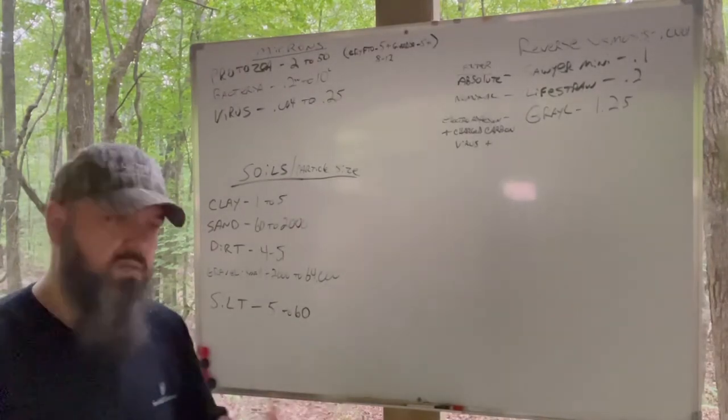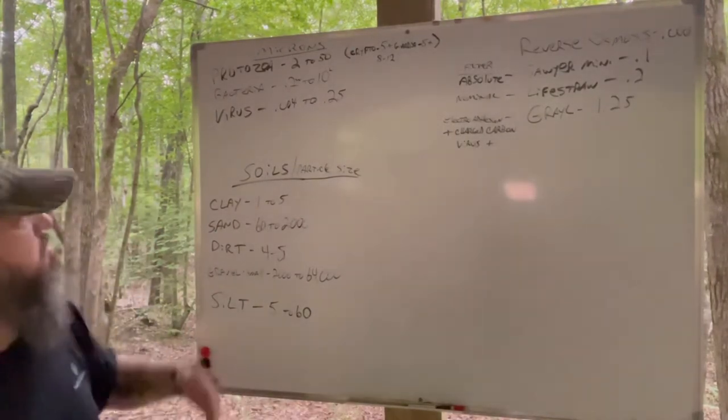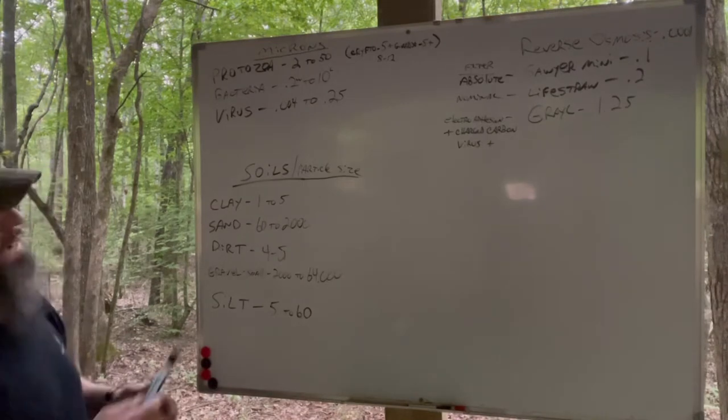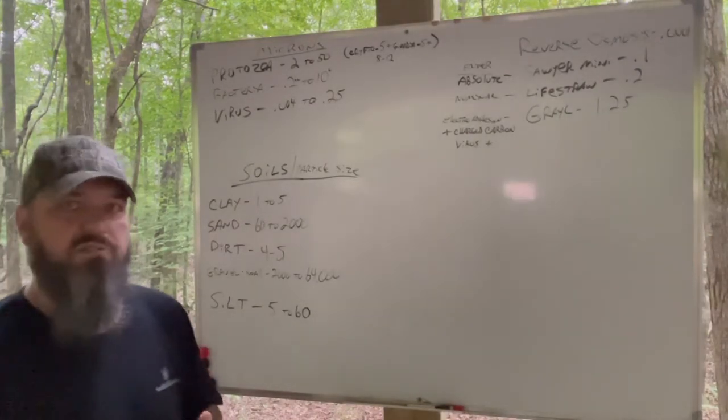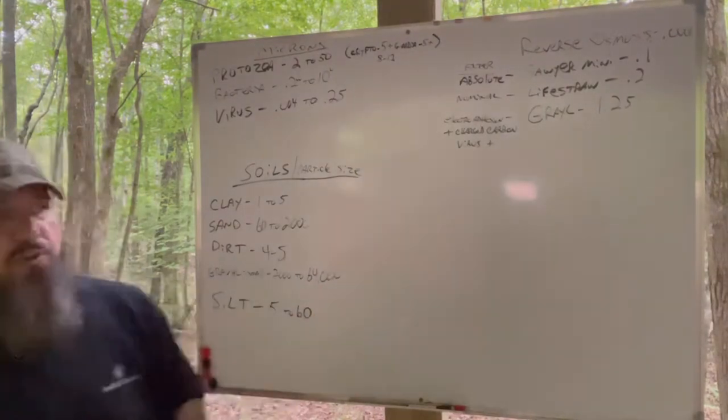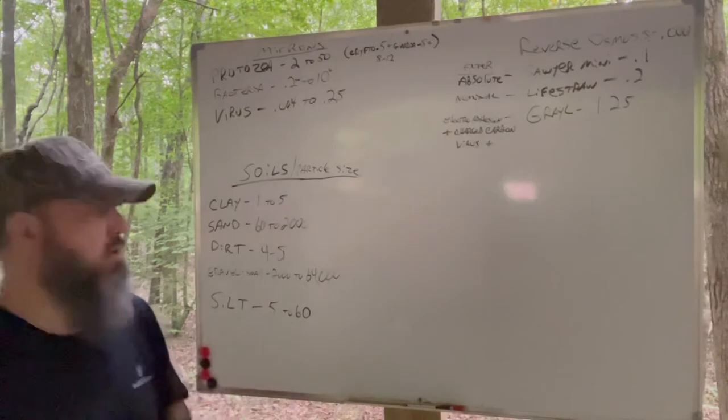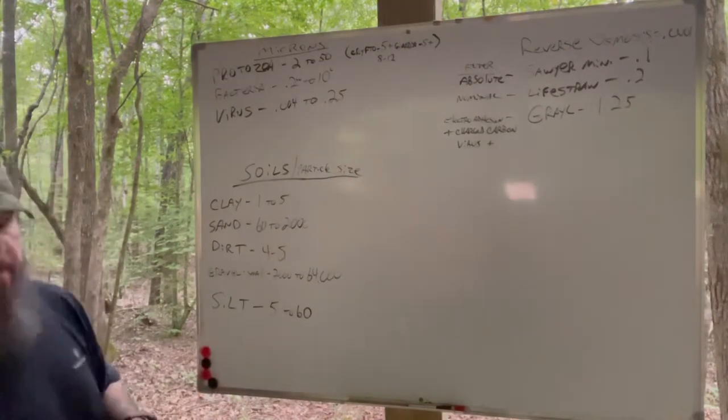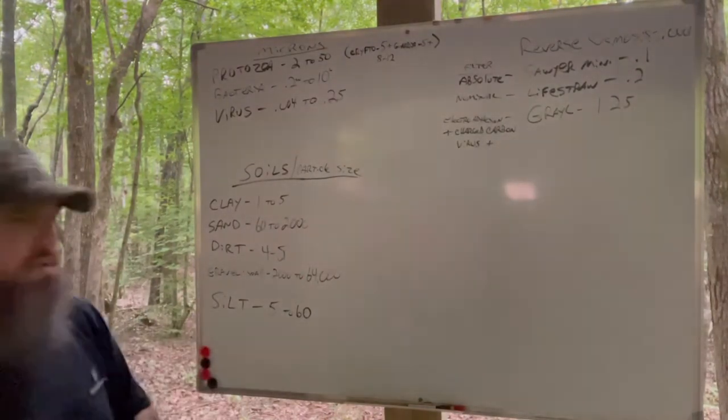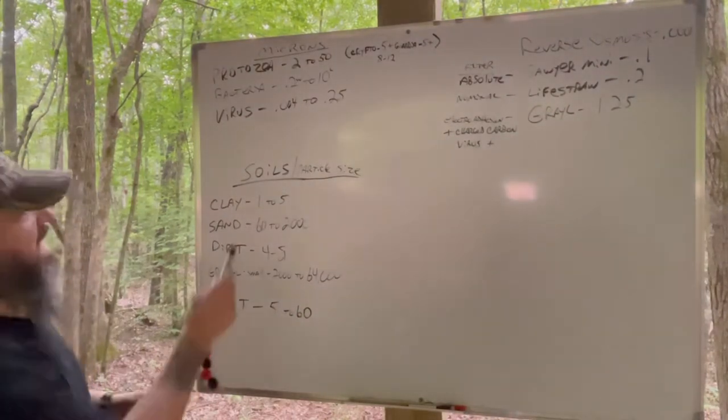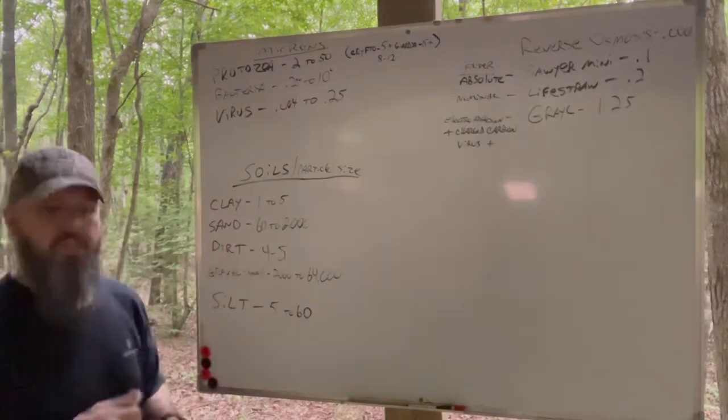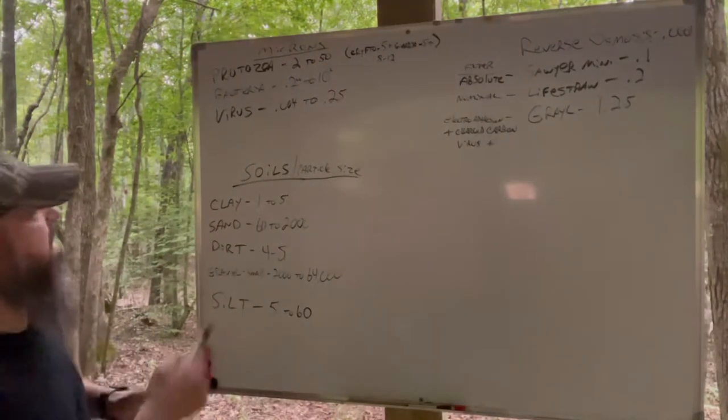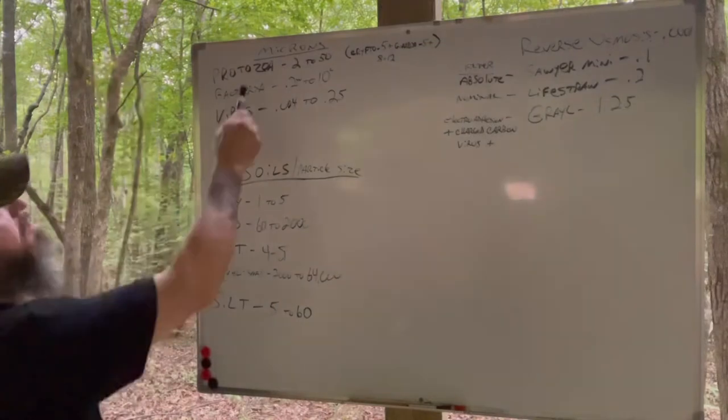The general rule or what you'll hear out here in the survival instructor community is: if it's clay, you can make your well closer to the water, the flowing water source. If it's sand or dirt, farther away. You want more of that ground to protect that. Keep in mind, we're not trying to dig deep enough to tap into a natural spring. We're talking about creeks, ponds, flowing water preferably. The general idea is: looser the soil, further away. Tighter the soil, the closer you can get it.